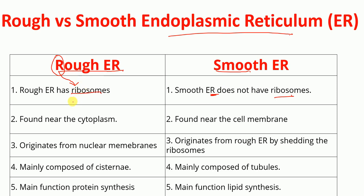Another difference is location. Rough endoplasmic reticulum is found near the cytoplasm, whereas smooth endoplasmic reticulum is found near the cell membrane.